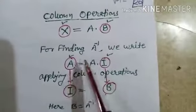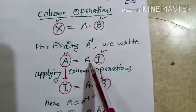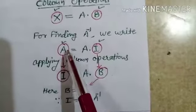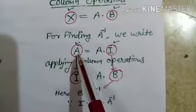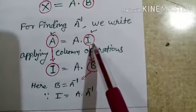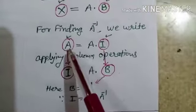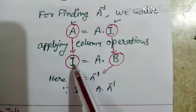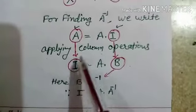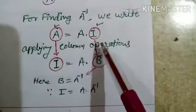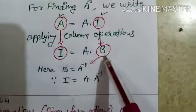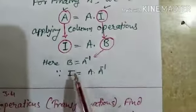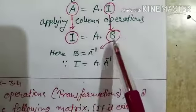For finding A inverse using column operations, we write A equals A into I, placing the identity matrix on the right side. The column operations will be applied on matrix A and simultaneously on the identity matrix I. We convert A into the identity matrix using column operations, and the identity matrix will be converted into some other matrix B, giving A·B = I, so B is A inverse.